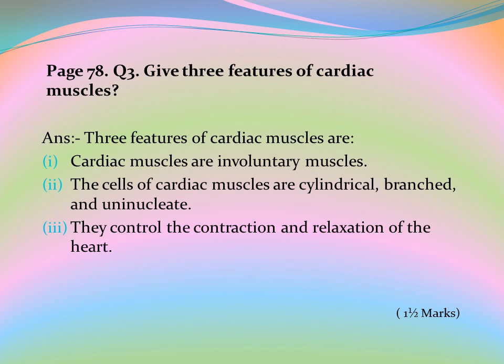Page 78, Question 3: Give three features of cardiac muscles. Answer: 1. Cardiac muscles are involuntary muscles. 2. The cells of cardiac muscles are cylindrical, branched, and uninucleate. 3. They control the contraction and relaxation of the heart.